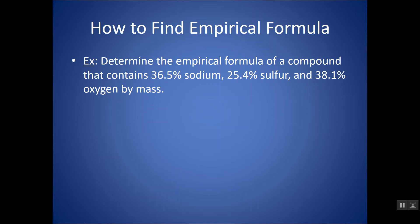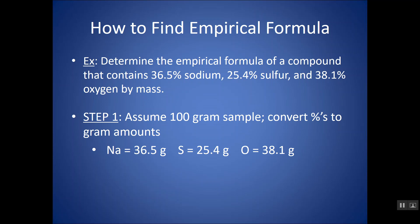So the first thing is, if they give you mass percents, assume you have a 100-gram sample. So essentially, all the mass percents just turn into masses. Instead of 36.5% sodium, since I'm assuming I have a 100-gram sample, I have 36.5 grams of sodium, 25.4 grams of sulfur, 38.1 grams of oxygen. It just makes my problem easier to assume 100. You could assume any amount and then figure out the masses of each, but by assuming 100, I don't have to change any of these numbers.